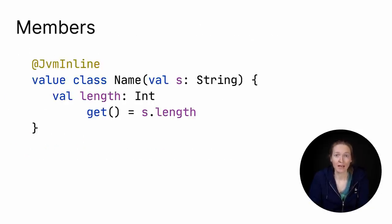As for regular classes, inside inline value classes you can define member functions and properties. Since inline value class is a wrapper over one property, other properties are allowed only if they don't have backing fields. They should compute the value on each access, like in this example. Mutable properties without backing fields are also allowed.